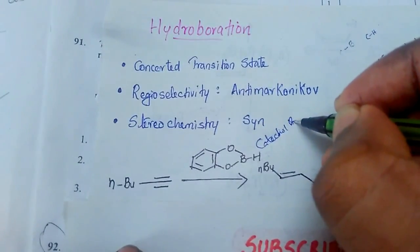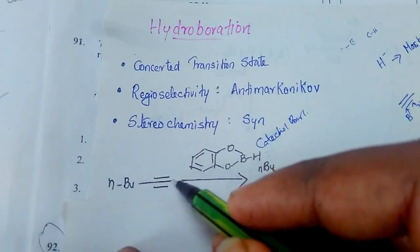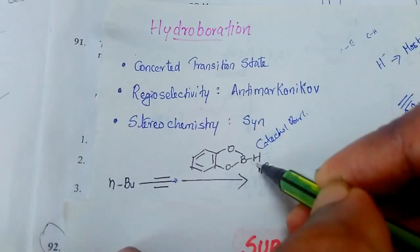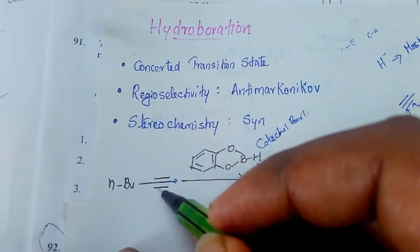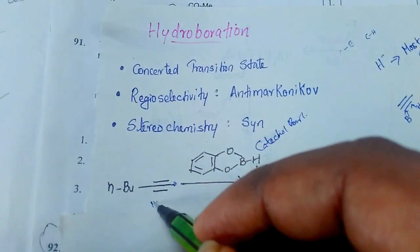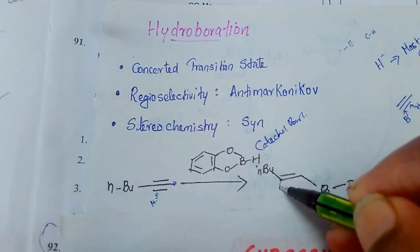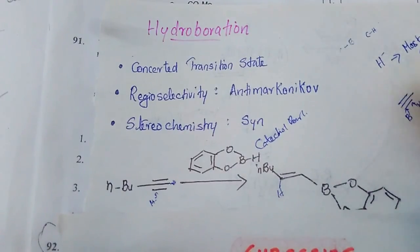In the reaction with catechol boron, the most substituted carbon here has one hydrogen, so H minus goes to the carbon atom having lesser number of hydrogens or more substituted carbon. So hydrogen goes here, H minus comes like this and the boron like this.